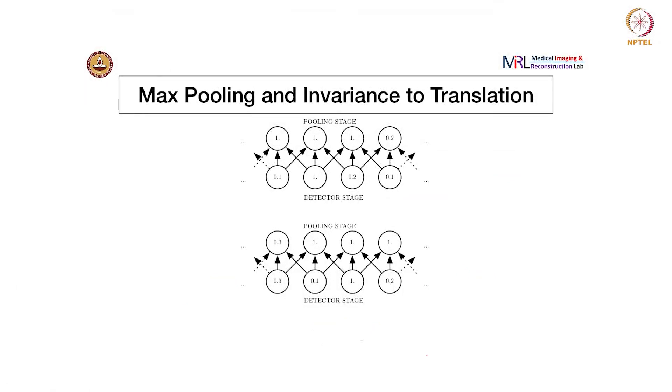We will look at how max pooling helps with translational invariance to a certain degree by looking at a typical 1D kind of input, not the 2D that we have for images. If you look at the image at the bottom first, there are two stages. One is before we do max pooling; this is the output, and this is called the detection stage.